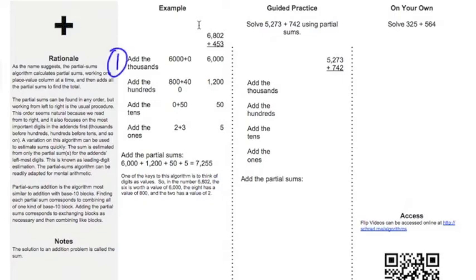step one is in the thousands place. So in my thousands place, I've got a 6,000. That's the value of that 6. And I don't have anything in the thousands place in the bottom of it. So I just get 6,000 plus 0, which equals 6,000.